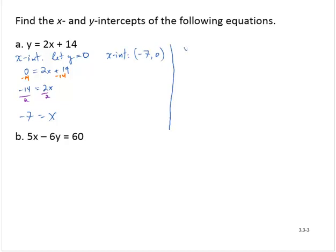To find the y-intercept, I let x take the value 0. And so then I would have y equals 2 times 0 plus 14. Notice that the y is already isolated, so I just need to simplify the right-hand side. Following the order of operations, I would have 0 plus 14,